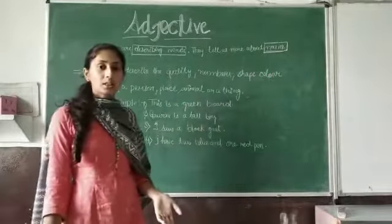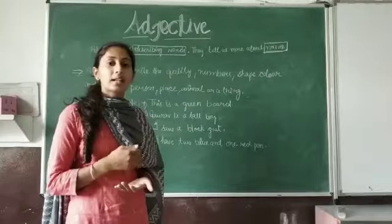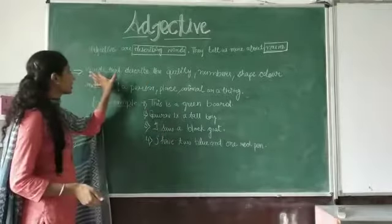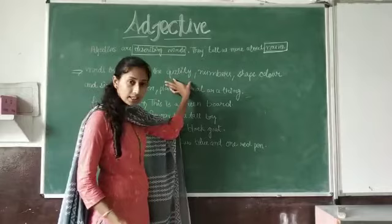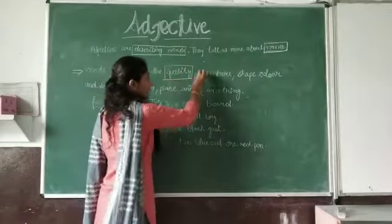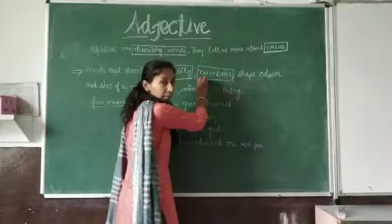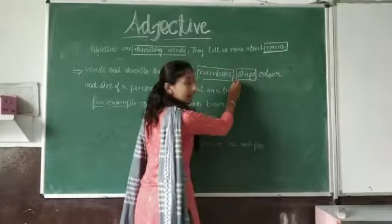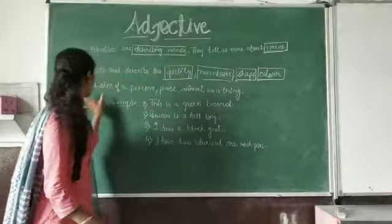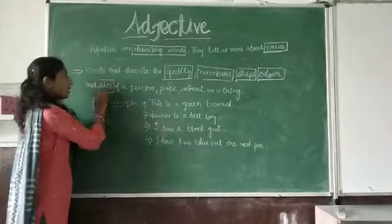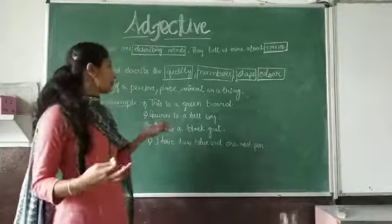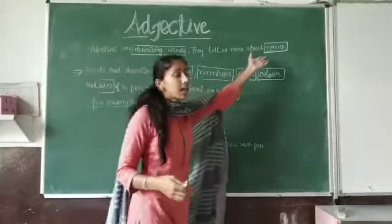So what are nouns? Name of person, place, animal or thing. So words that describe the quality, numbers, shape, color and size of a person, place, animal or thing. So name of person, place, animal or thing is a noun.